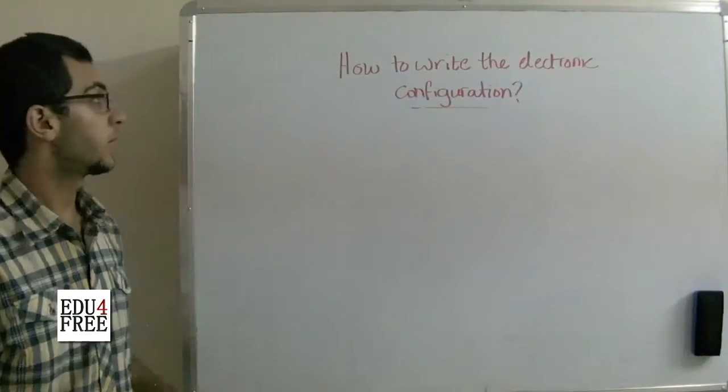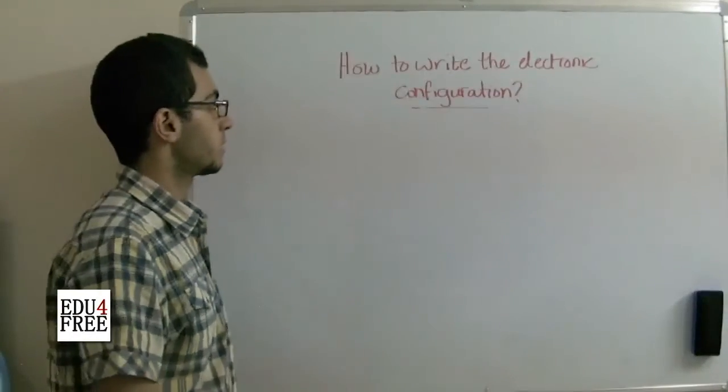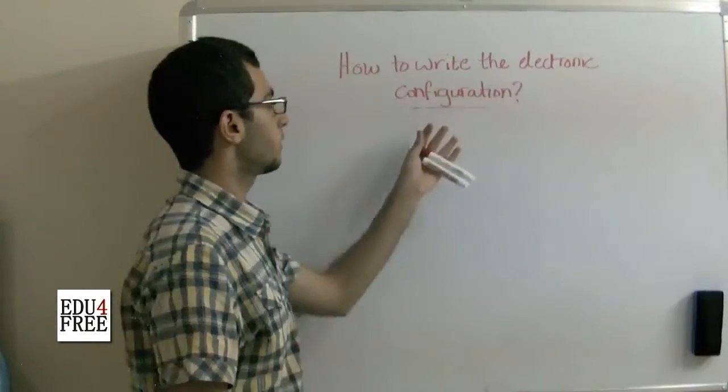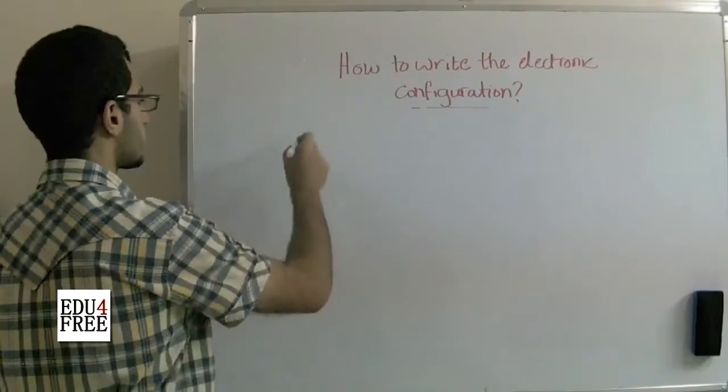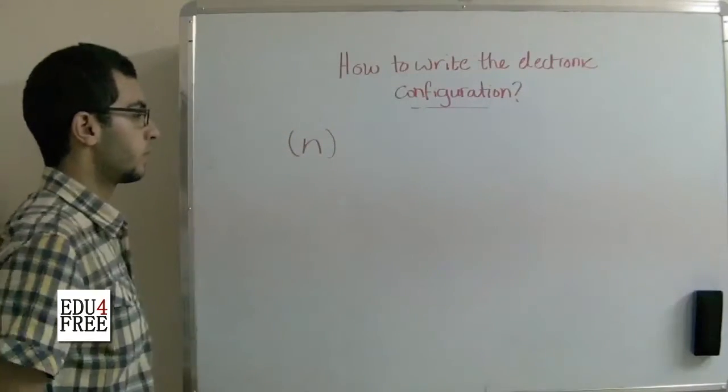Hello everybody and welcome back. Today we will learn the methods of writing the electronic configuration. The first method is by using the principal quantum number.